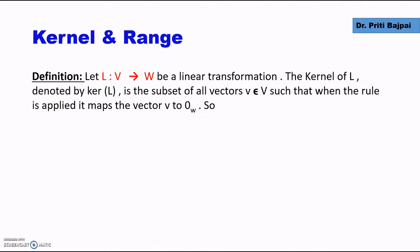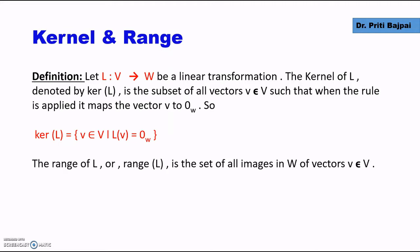If we take a mapping L from a vector space V to W, and this is a linear transformation, then the kernel of L is the set of all such vectors V such that when L is applied on V, it maps to the zero vector of vector space W. Or we can say kernel of L is the set of all vectors V such that L(V) equals zero of W. And range is nothing but the set of all images L(V).